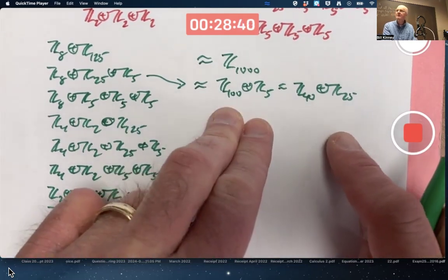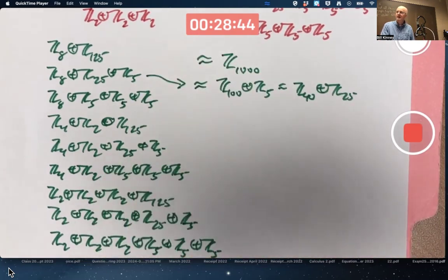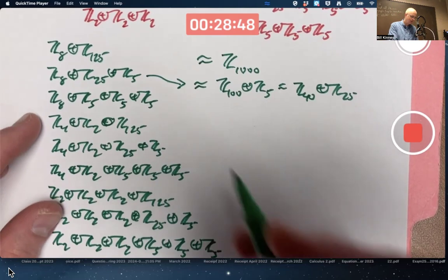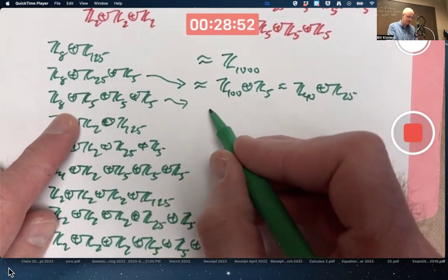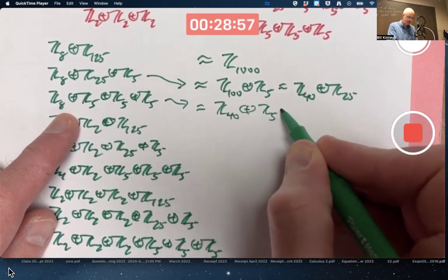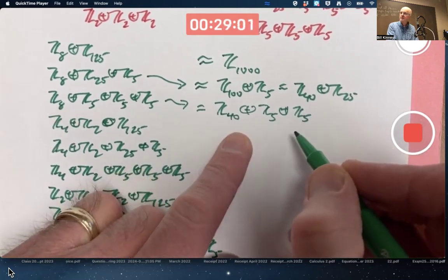There are ways you probably wouldn't think of if you're using my algorithm here, but they do work. With this one, I could combine Z8 with one of the Z5s and write Z40 and then two Z5s, and that's really the only way of doing that because no longer do we have relatively primed subscripts.